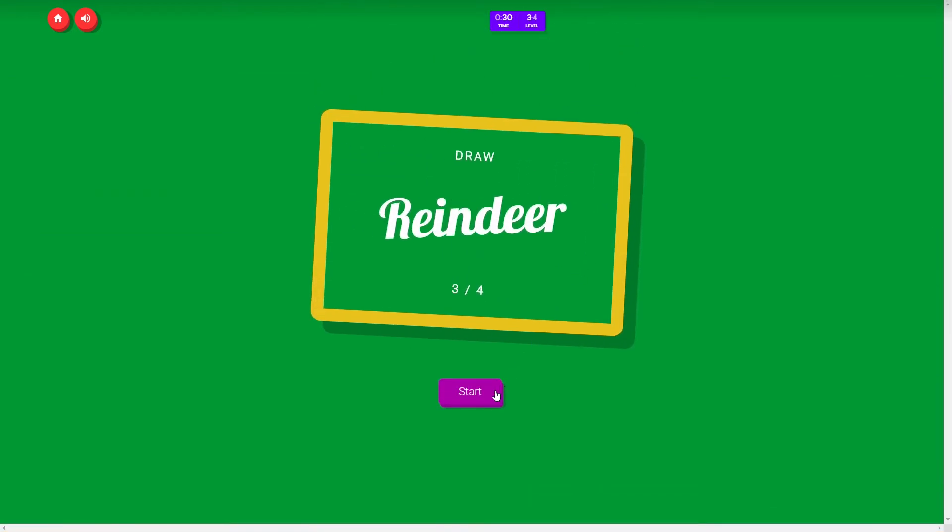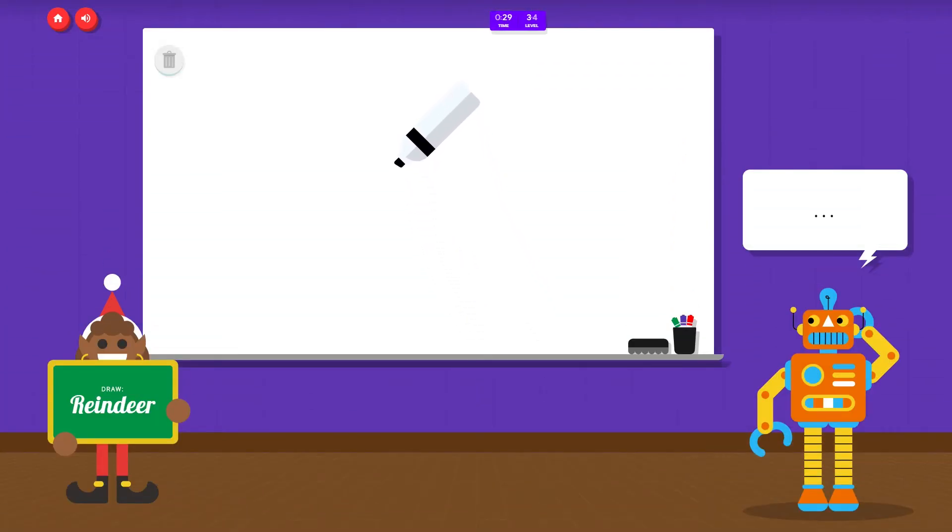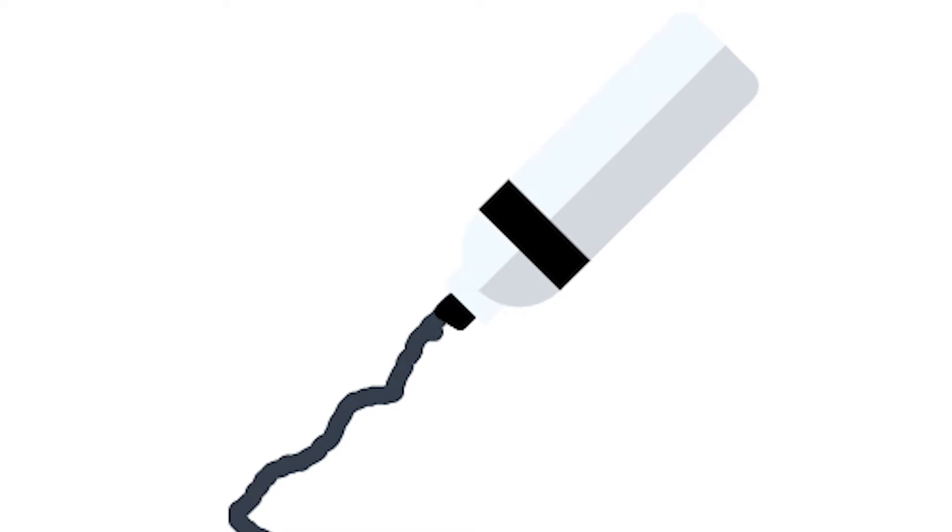I see line, or waterslide, or nose, or spoon. Oh I know, this is reindeer.